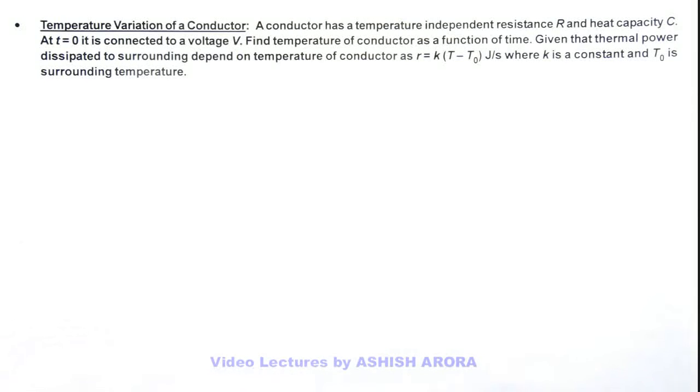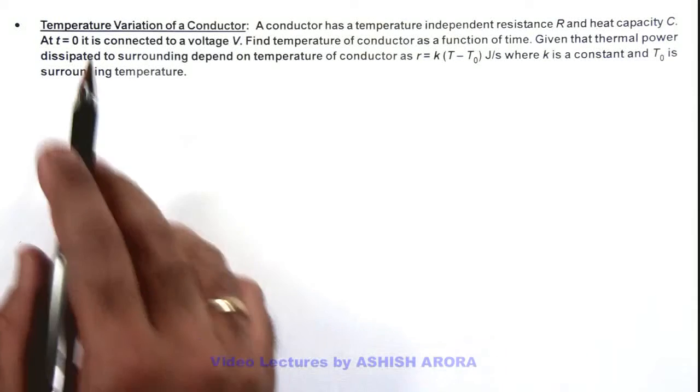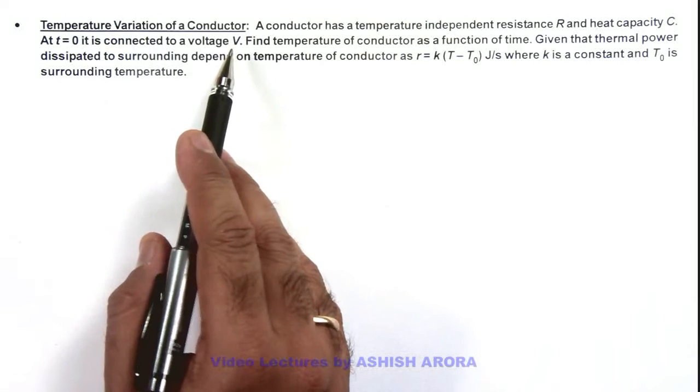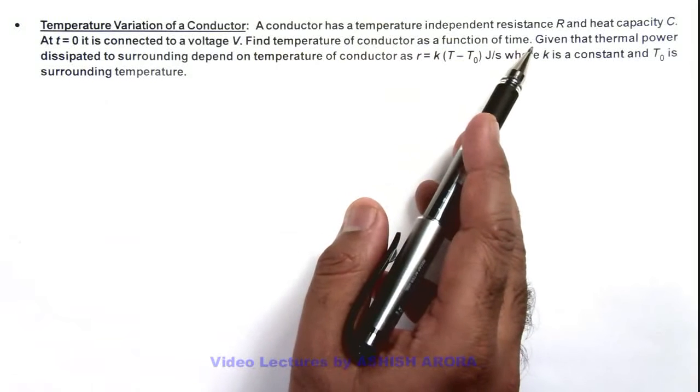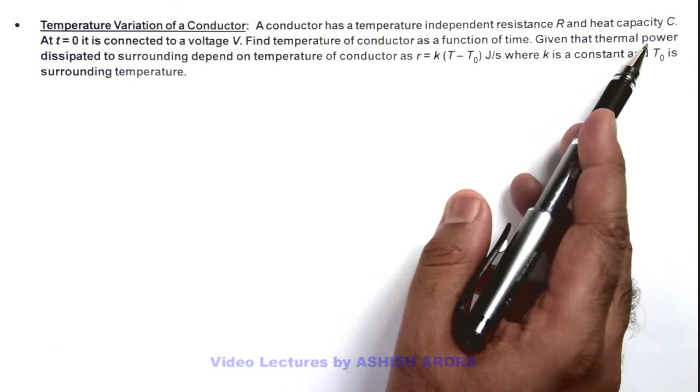In this illustration we'll study about the temperature variation of a conductor. Here we are given that a conductor has a temperature independent resistance R and heat capacity C.